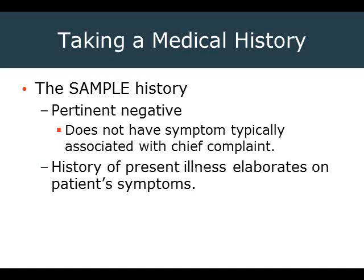Pertinent negatives are equally important. For a patient with chest discomfort, asking about shortness of breath, nausea, vomiting, and anxiety and getting negative answers — those are pertinent negatives. The textbook picture of an AMI patient includes chest pain, shortness of breath, radiation, nausea, vomiting, diaphoresis, and a sense of impending doom or anxiety. When a patient doesn't have symptoms typically associated with the chief complaint, document those as pertinent negatives.